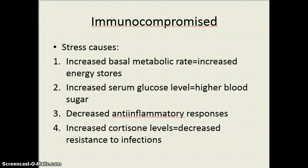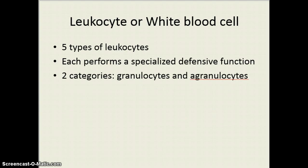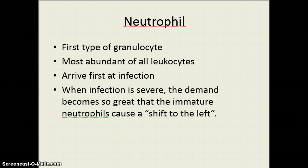Decreased anti-inflammatory responses and cortisol levels mean that anybody under stress — physical or mental — is immunocompromised. Looking at our white blood cells in review, they each have a special function and we have either the granulocytes or the agranulocytes. The granulocytes have granules in their cytoplasm — those are your neutrophils, eosinophils, and basophils. Your agranulocytes are your lymphocytes and monocytes. The neutrophil is the first one to the site of infection. It's very active but runs out of energy quickly. An increase in mature cells is known as a shift to the right, and an increase in immature cells is a shift to the left.